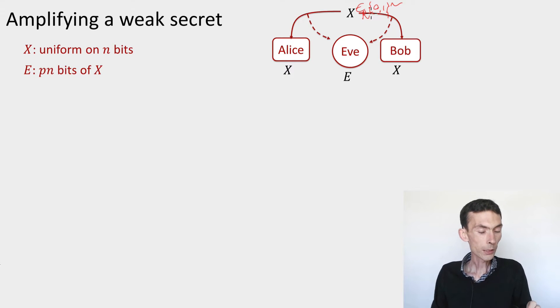And here, for the example, the way we'll think of this side information is that the eavesdropper has simply stored as side information some of the bits of x, p times n of them, where p is some number between 0 and 1.